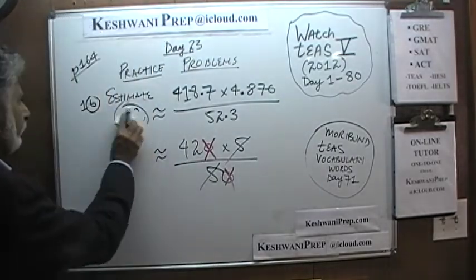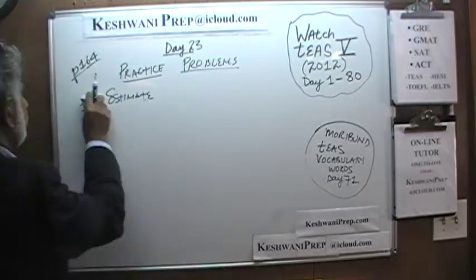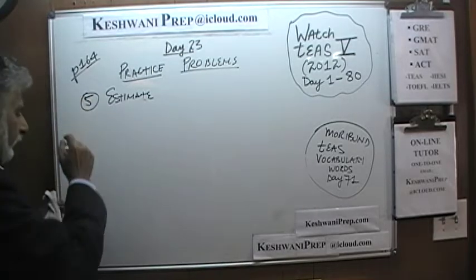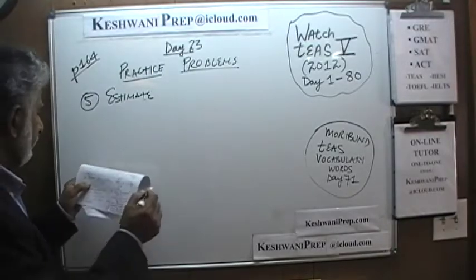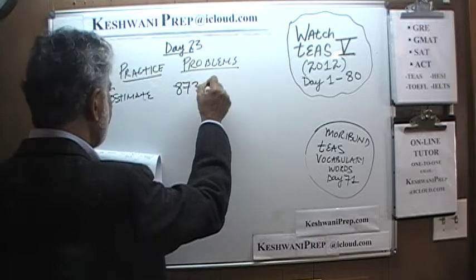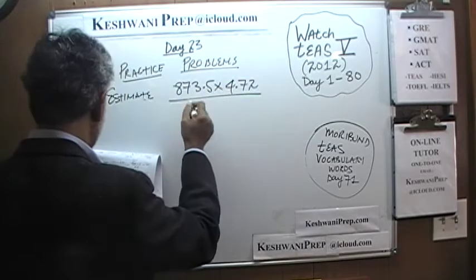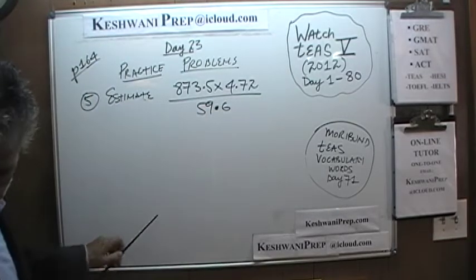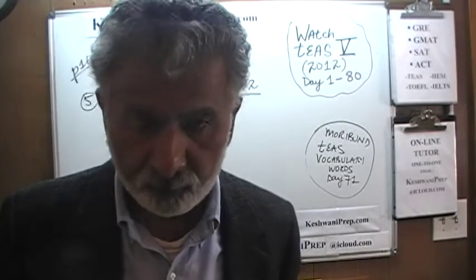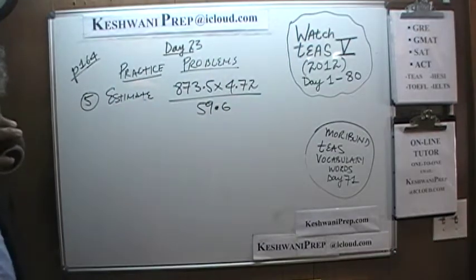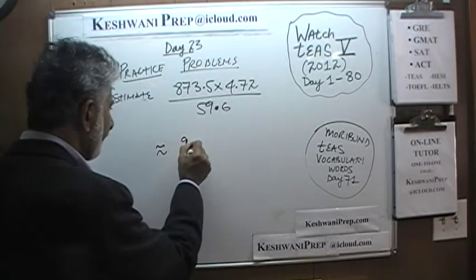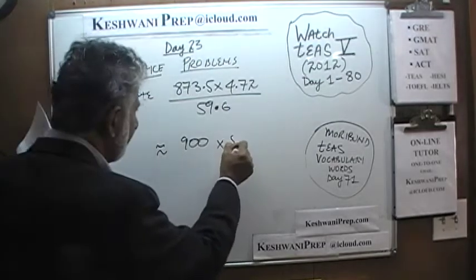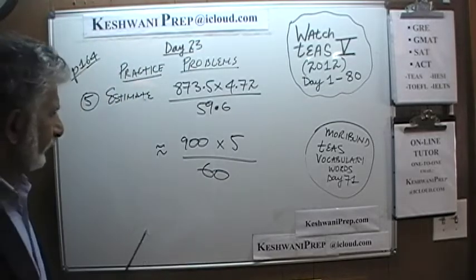Let's do one more. This time we will do a problem you actually see in front of you — problem number 5. There are 5 problems on this page; we did problem number 1. Problem 5 says: 873.5 times 404.72 over 59.6. Pause the video and do it yourself first. Let's approximate: 873.5 is about 900, 404.72 — I'll just say it's 5, and 59.6 is approximately 60.